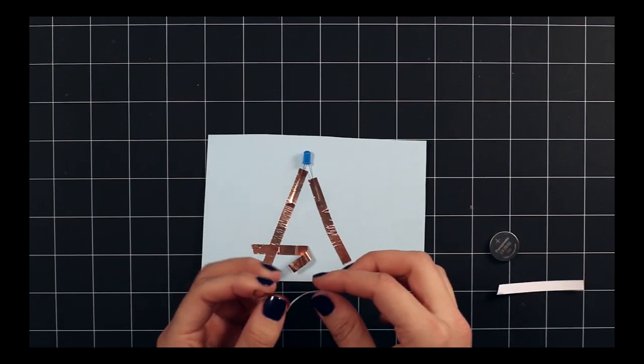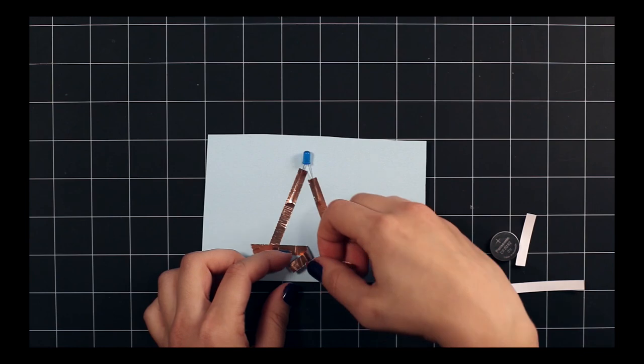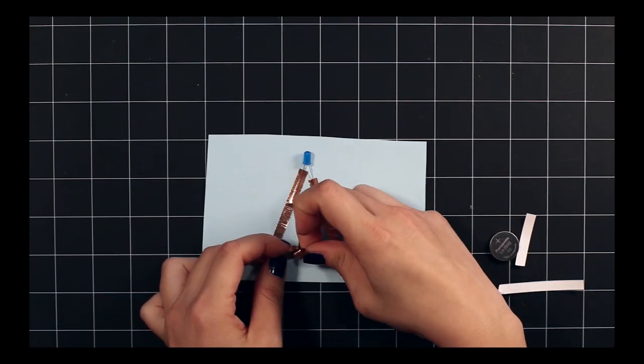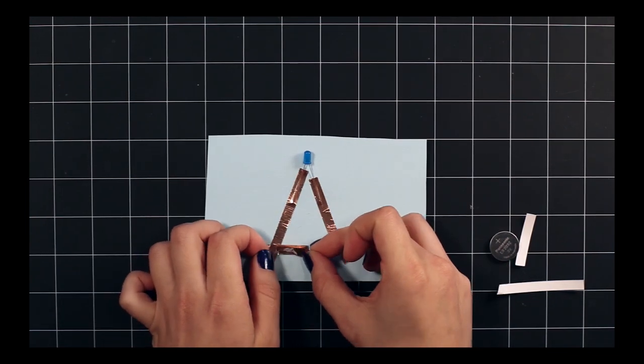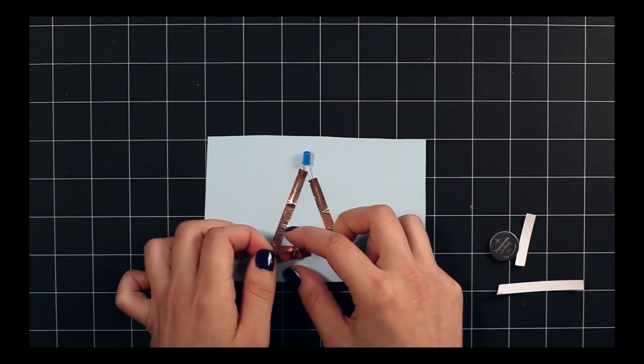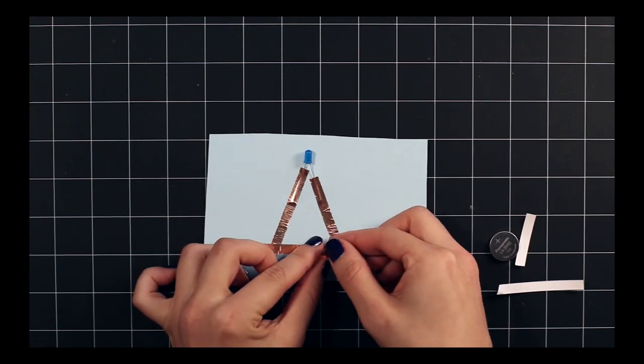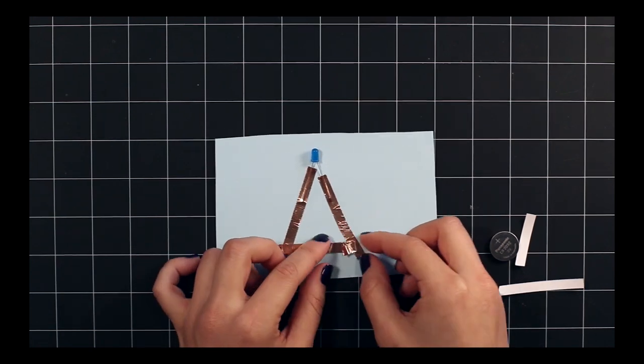And we're going to take our last piece of copper tape and affix it to this third piece so that you have a double sided piece of tape that doesn't stick to the coin cell battery when you push it. This will allow you to make a switch that you can turn your LED on and off with.